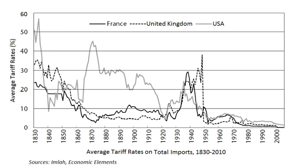Britain practiced free trade unilaterally in the vain hope of imitation, but the United States emerged from the Civil War even more explicitly protectionist than before. Germany under Bismarck turned in this direction in 1879, and the rest of Europe followed. During the 1880s and 1890s, tariffs went up in Sweden, Italy, France, Austria-Hungary, and Spain. Britain's economy still grew, but inexorably lagged. From 1870 to 1913, industrial production rose an average of 4.7% per year in the US, 4.1% in Germany, but only 2.1% in Britain. Britain was surpassed economically by the US around 1880, and its lead in textiles and steel eroded as other nations caught up.